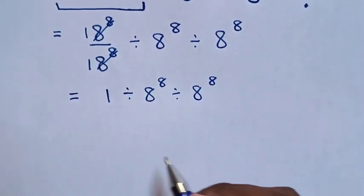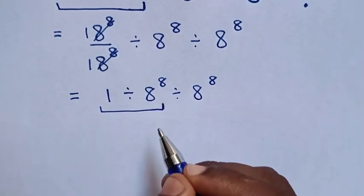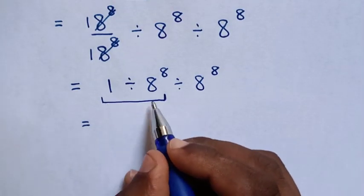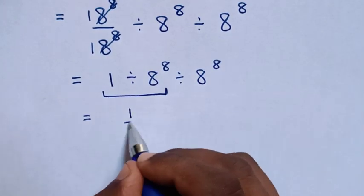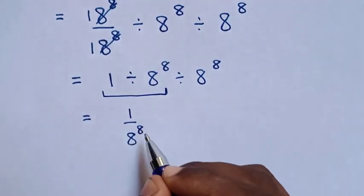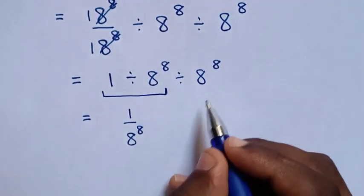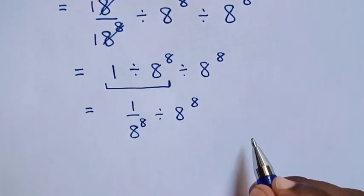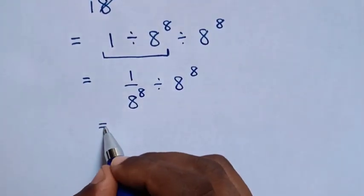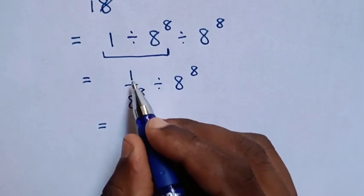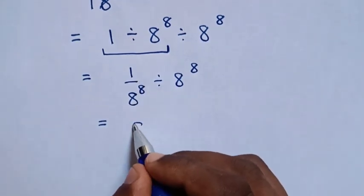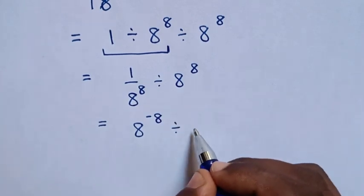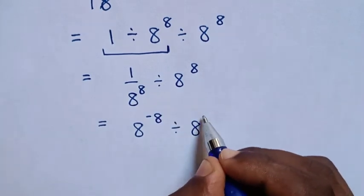In the next step, we start to deal with the first operation. So it will be equal to: 1 divided by 8 power of 8 is the same as 1 over 8 power of 8, then divide by 8 power of 8. In the next step, 1 over 8 power of 8 is the same as 8 power of negative 8, then divide by 8 power of 8.